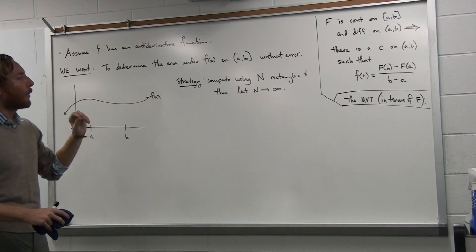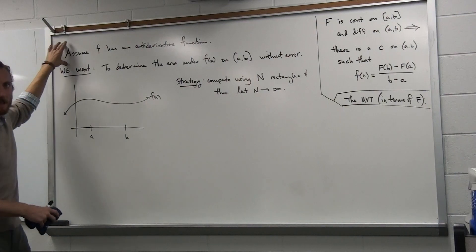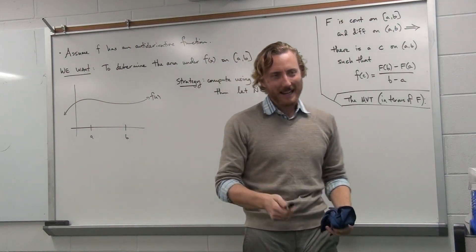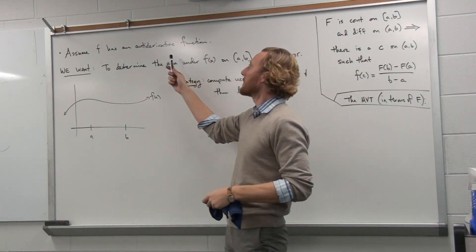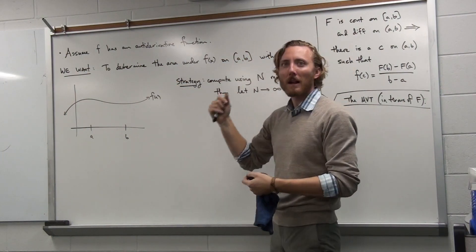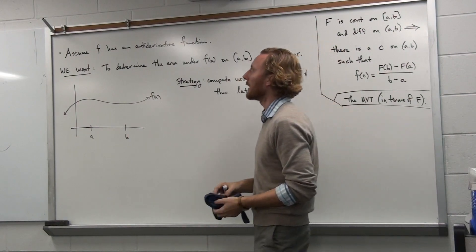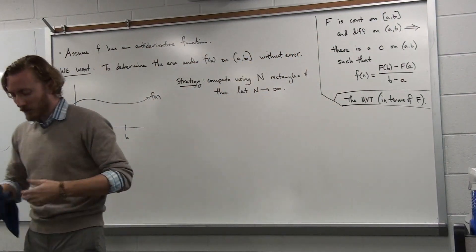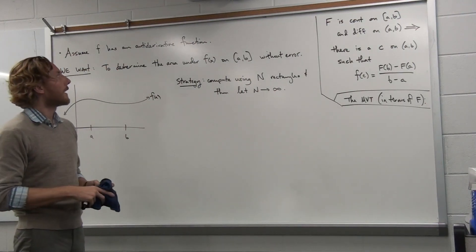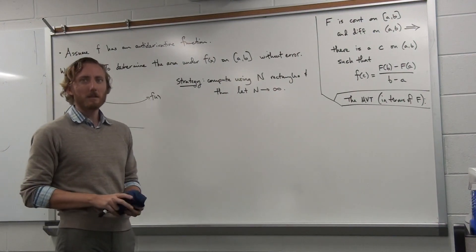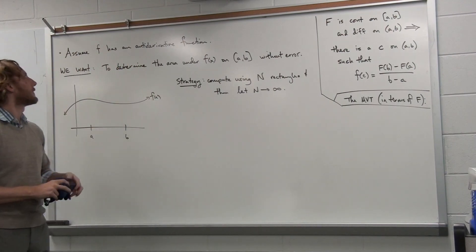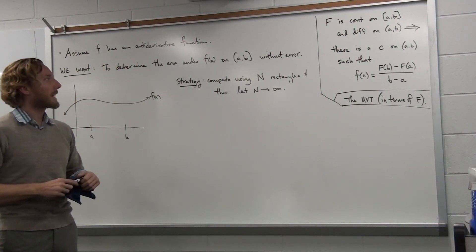In order to pull this off, we need one key assumption: we are going to assume that f has an antiderivative function. So we assume you can take the integral of f and get out some capital F function that is the antiderivative of little f. Almost every function we have encountered in this class is a function you could compute the antiderivative of. So let's start by assuming that we have an antiderivative function.